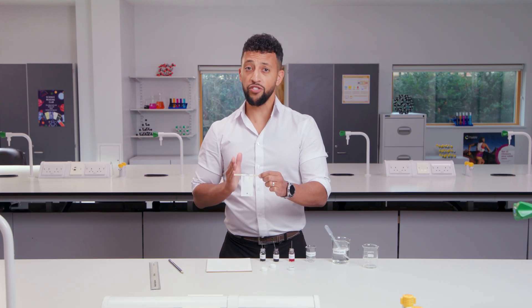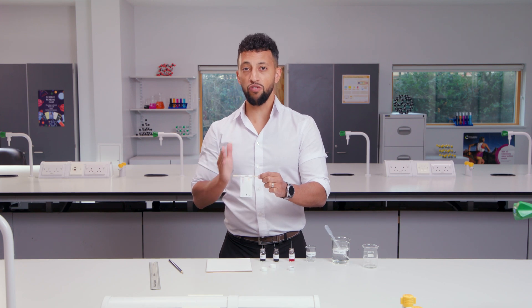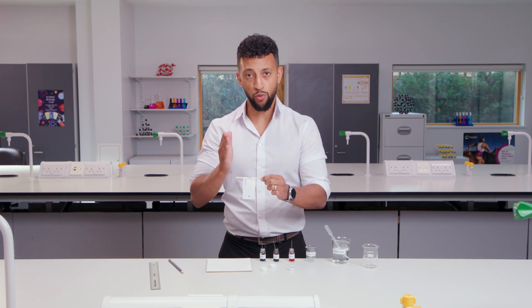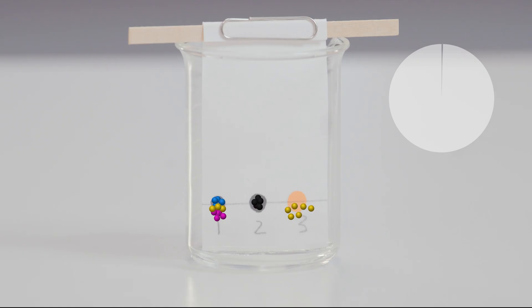The different substances that make up the inks separated and travelled different distances on the paper due to how soluble they are in water. Their movement depends on whether they have a stronger attraction for the mobile phase or the stationary phase. The sample two black ink has the strongest attraction for the stationary phase because it's the slowest to move up the paper.